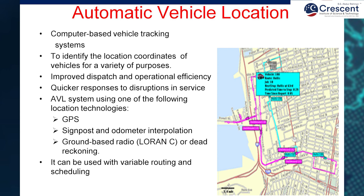Automatic Vehicle Location (AVL) is very much used today, where you can track a particular vehicle with a computer-based vehicle tracking system to identify the location and coordinates of the vehicle for a variety of purposes. You can track a commercial vehicle or a residential vehicle. This is very useful for the police department to find and track a particular vehicle. Improved dispatch and operational efficiency is achieved using AVL, with quicker response to disruptions in service. The AVL system uses location technologies such as GPS, signpost and odometer, ground-based radio, or dead reckoning. It can also be used with variable routing and scheduling.